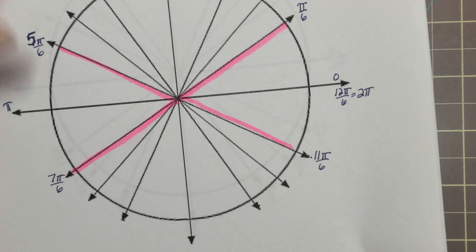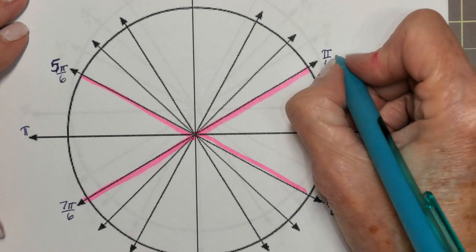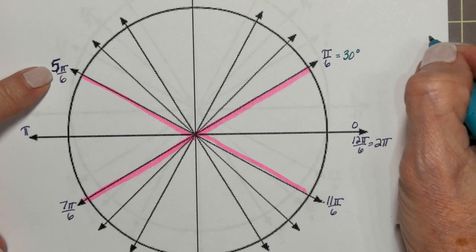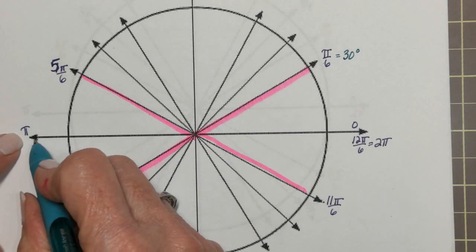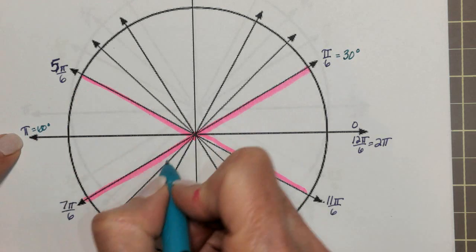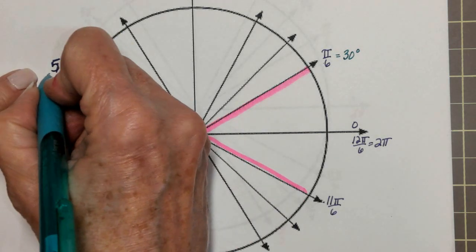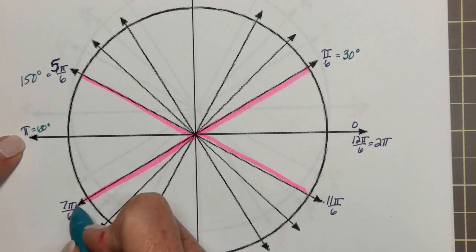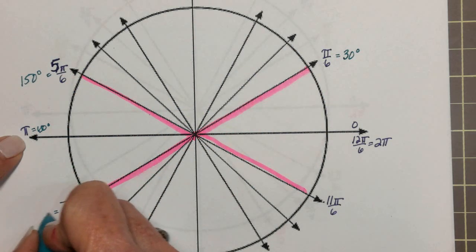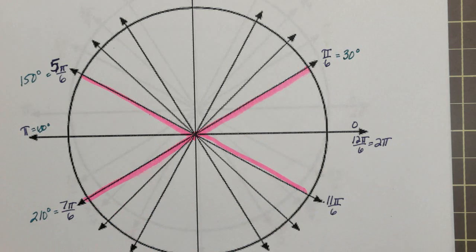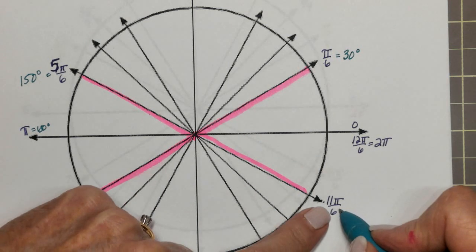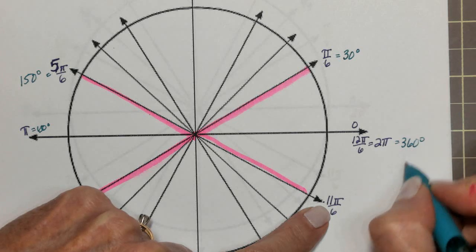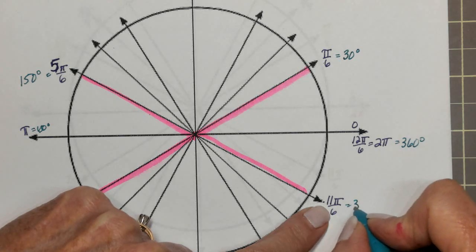Now for the 30 degree angles. Pi over 6 is 30 degrees. 5 pi over 6 is 30 less than 180, so that's 150 degrees. 30 more than 180 is 210 degrees. And 30 less than 360 would be 330 degrees.